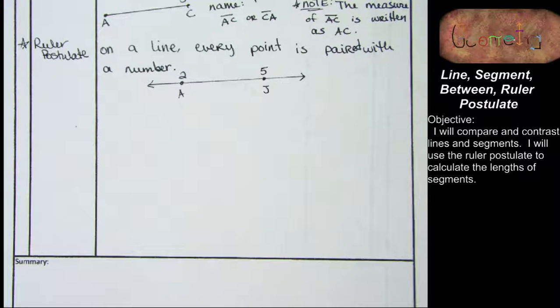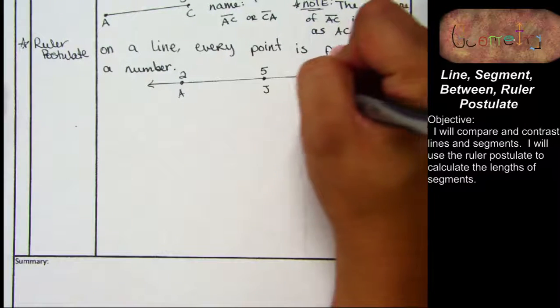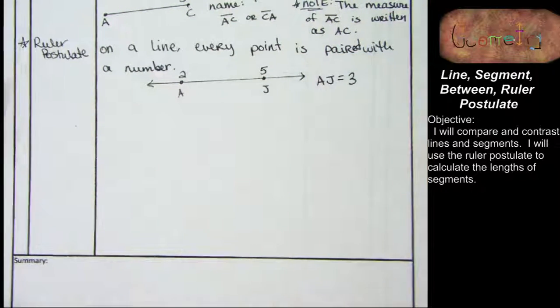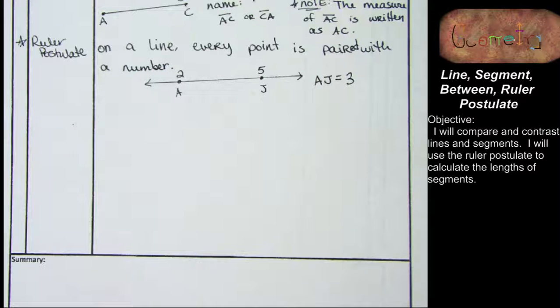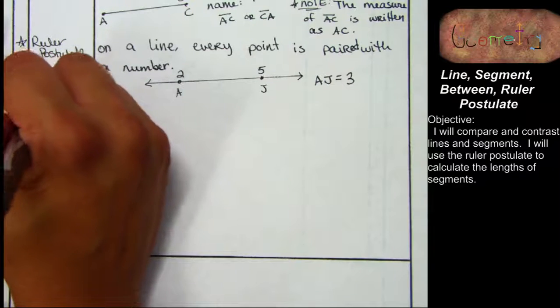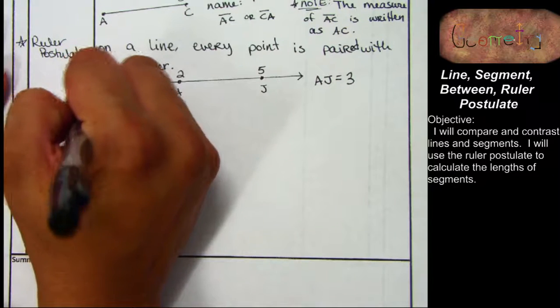And now we can talk about how far away these points are from each other. If we started at two, how many numbers would we have to count? We're talking whole numbers. In order to get to five? Three. Three. Okay, so we're going to start at two, and then we're going to go three, four, five. That means that the distance, the measure of line segment A, J is three. Because you have to count three units to go from the number two to the number five. Make sense? Yes. Good. Let's do our last concept and then we'll do some examples and then we're done.